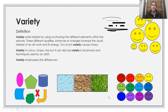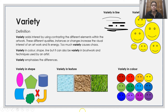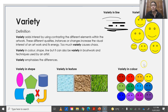Variety. Variety adds interest by contrasting the different elements within the artwork. These different qualities, instances or changes increase the interest of an artwork and its energy. Too much variety causes chaos. Variety is in colour, shape, line. Variety can also be in brushstroke and technique used by an artist. Variety emphasises the differences. So you have variety in shape, variety in texture, variety in line, variety in size, and variety in colour.